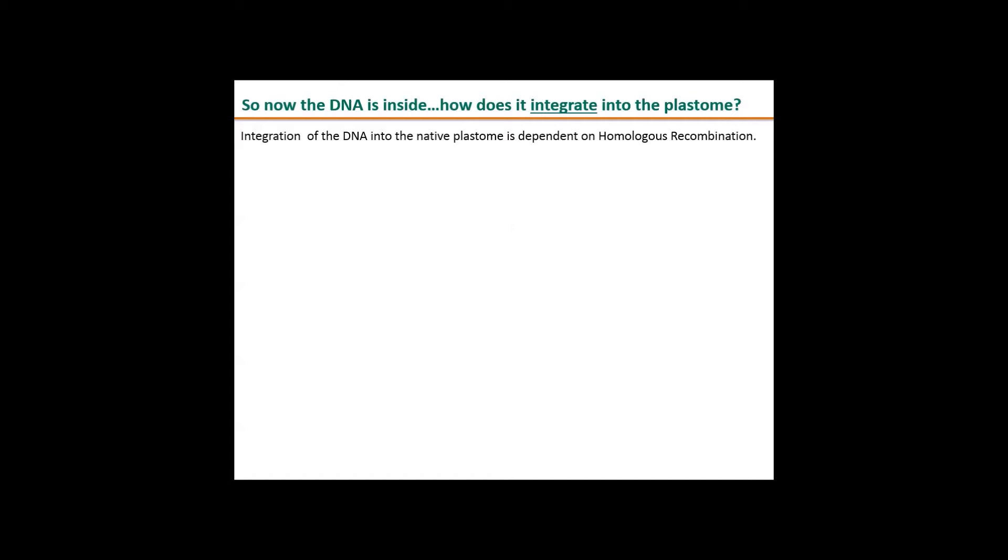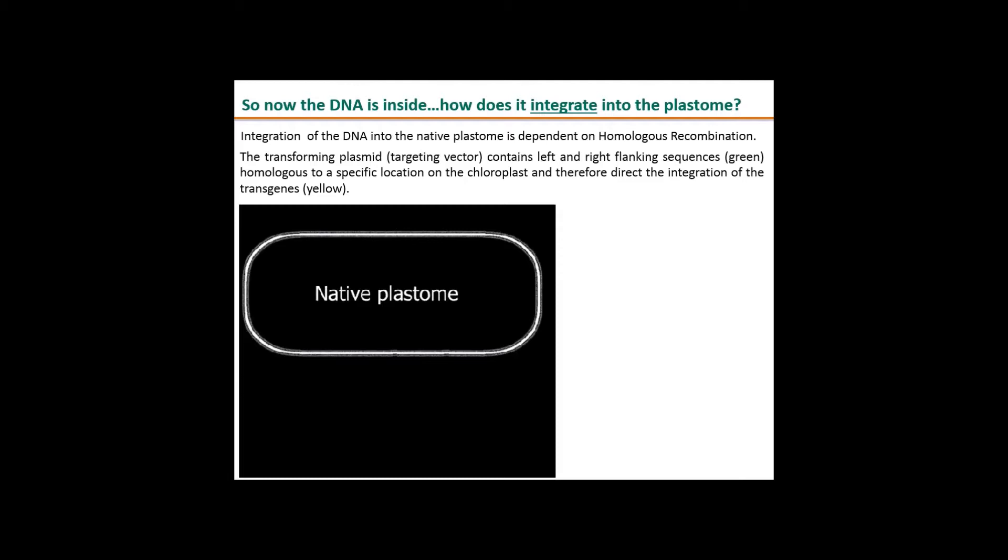When we have DNA delivered inside the cell, how does it get integrated? Because we're talking about stable transformation. The integration of DNA, independently of the method you use, is always through homologous recombination. I can show you a representation not to scale of the native plastome. When we deliver the targeting vector through biolistics, it contains left and right flanking sequences in green, homologous to the native plastome sequences, also in green. We have the target genes represented in yellow. Once we deliver it into the chloroplast, homologous recombination happens and we trick the plant into thinking it wants to get that transgene in.